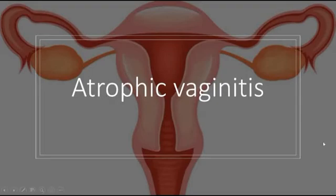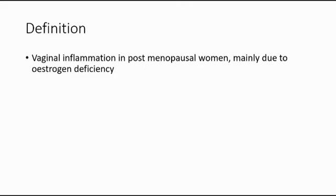Today I'm going to talk about atrophic vaginitis. Atrophic vaginitis is the inflammation of the vagina in postmenopausal women, mainly due to oestrogen deficiency.